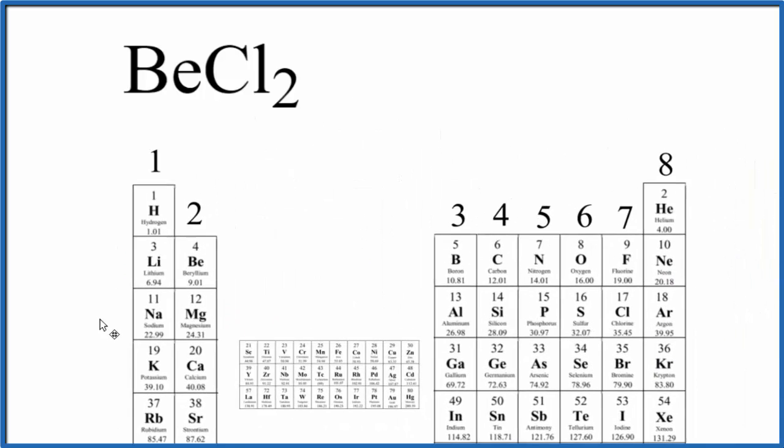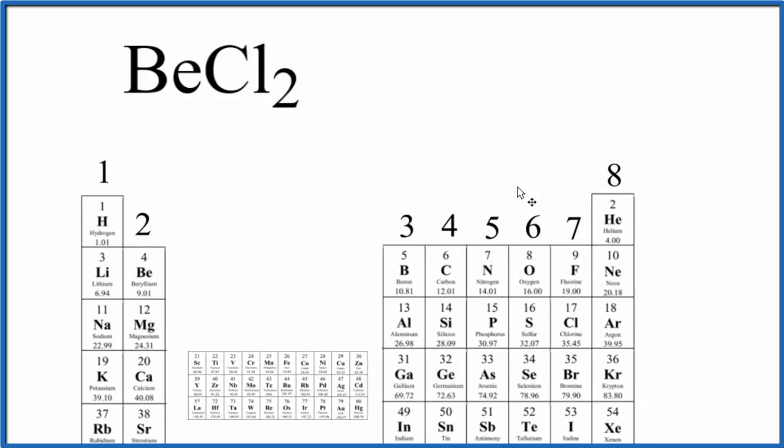You can use the periodic table to help us. So we find beryllium, that's right here in group 2, that has two valence electrons, and then chlorine, group 17, sometimes called 7a, that has seven valence electrons. We have two chlorine atoms, so 2 plus 14, 16 total valence electrons for the BeCl2 Lewis structure.